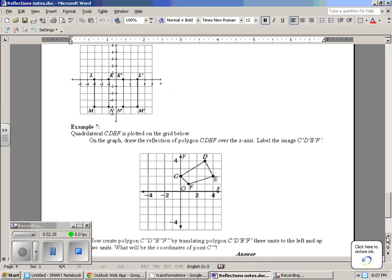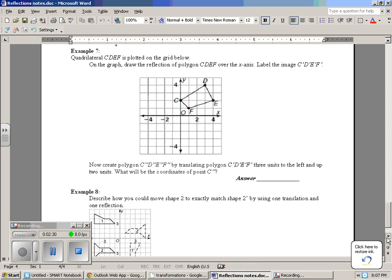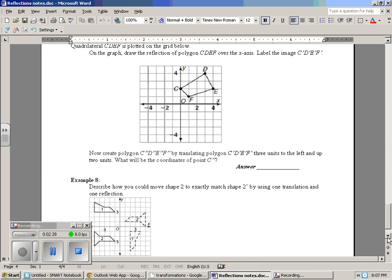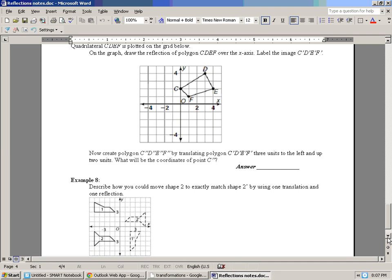Let's go down to example 7. Quadrilateral CDEF is plotted on the grid below. On the graph, draw the reflection of the polygon CDEF over the x-axis. Label the image CDEF prime. So the first thing we do is flip it over the x-axis.